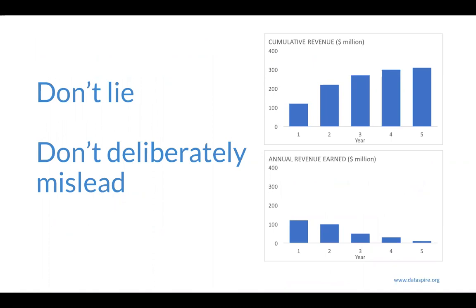It wouldn't be fair if I didn't end on: don't lie and don't deliberately mislead with your data. It's not an effective way to communicate, and we need to be truthful and honest. What our evidence shows is what it shows. If the data aren't showing what you expected, that's fine — it could actually be a really exciting story to explore why. Maybe your sample isn't large enough, or your understanding of the phenomenon doesn't jive with what's going on. Manipulating graphs to show what you want rather than what the data show is not okay.